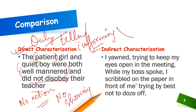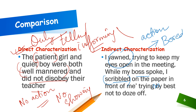Now indirect characterization: 'I yawned, trying to keep my eyes open in the meeting while my boss spoke. I scribbled on the paper in front of me, trying my best not to doze off.' Here I can see action — scribbling, yawning, trying to keep eyes open — all of which suggests that I am bored. There's no direct telling of what I'm feeling; it's shown through action. This is indirect characterization.